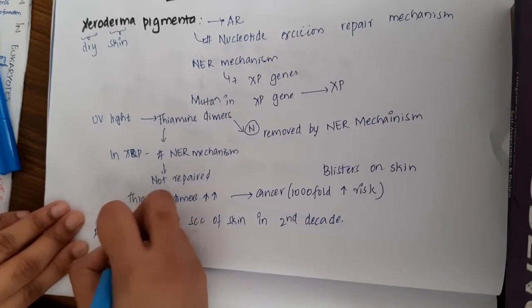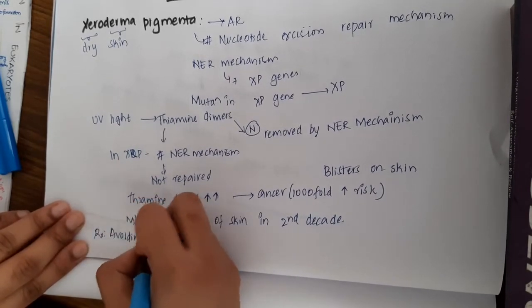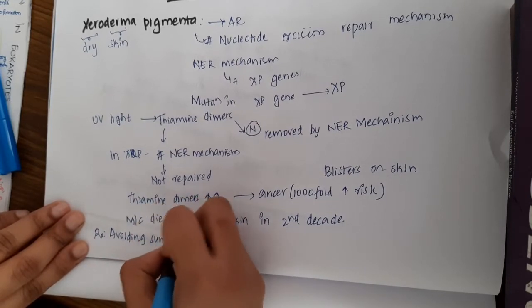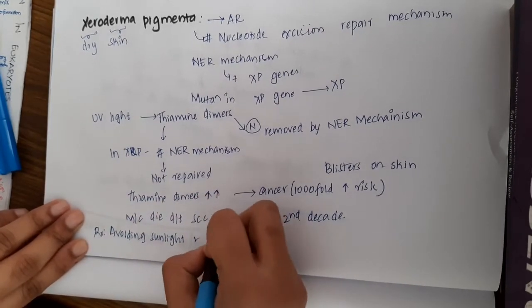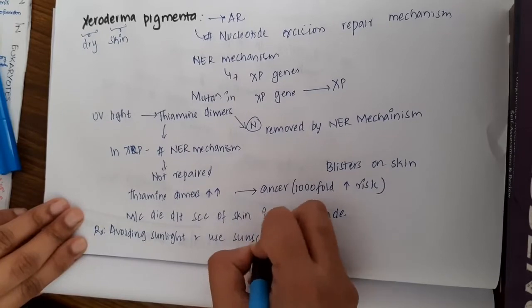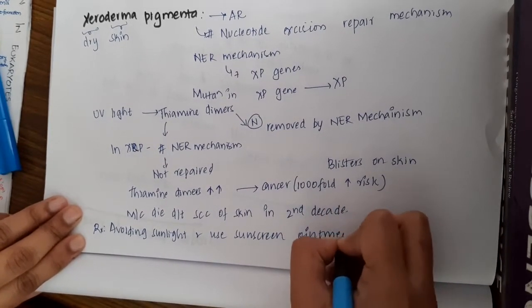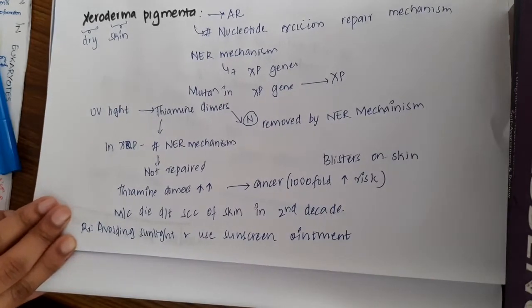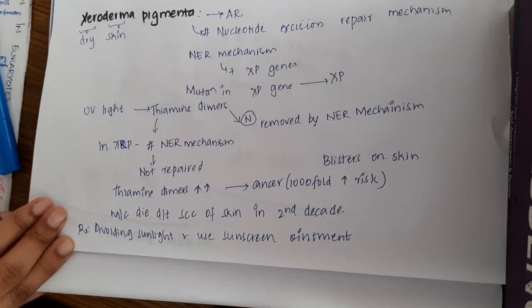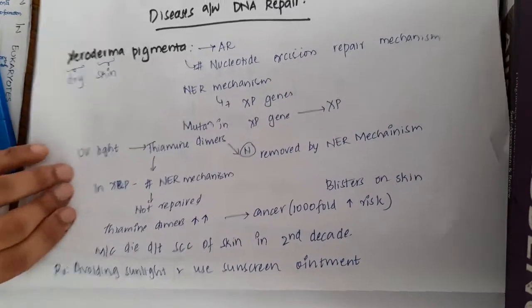How are you going to treat it? There is no treatment available, but you can avoid sunlight and use sunscreen ointments over their bodies, especially over sun-exposed areas. The next diseases associated with DNA repair mechanisms are ataxia telangiectasia.